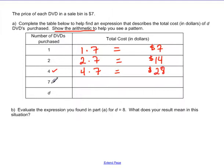And what if I buy seven DVDs? Well, the same kind of thing is going to go on. I've got seven DVDs. Each one costs $7. So now I'm up to a total of $49.